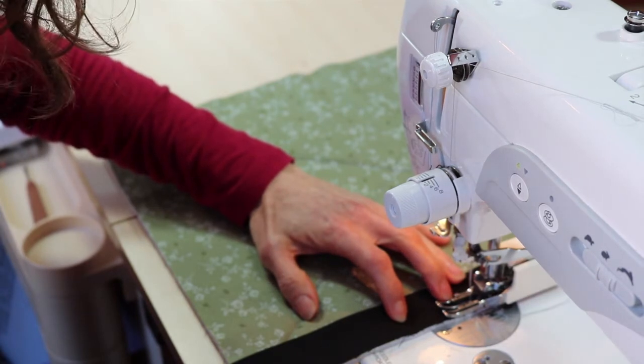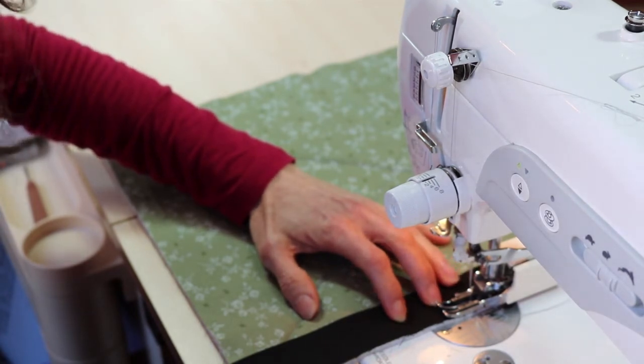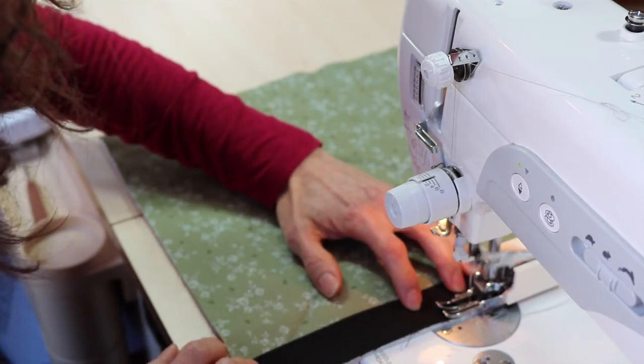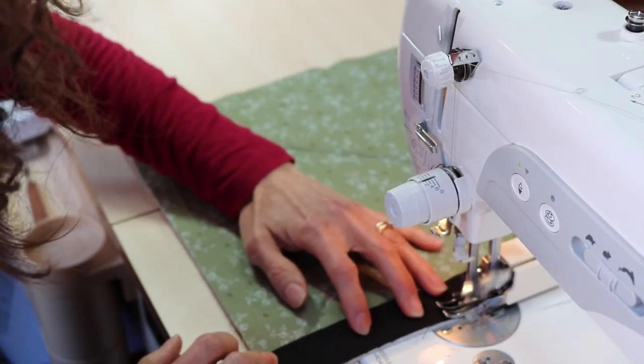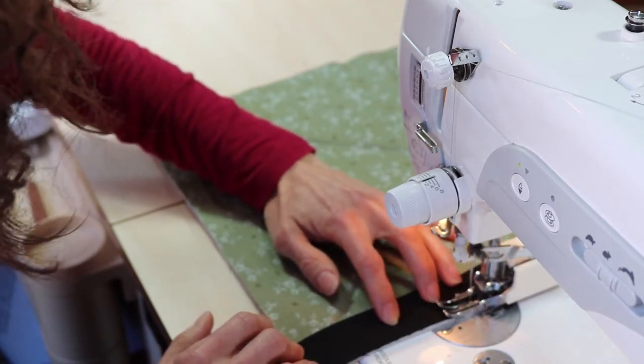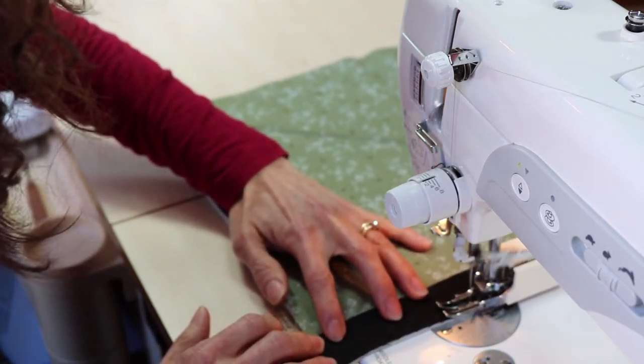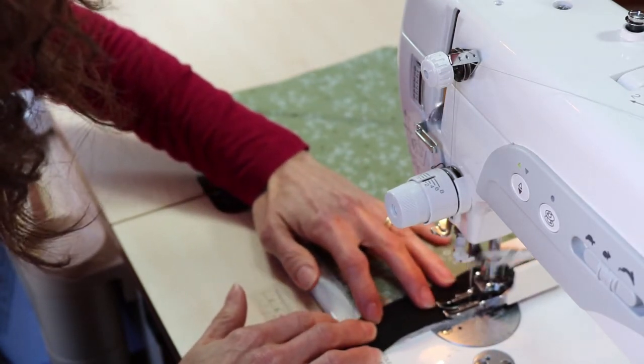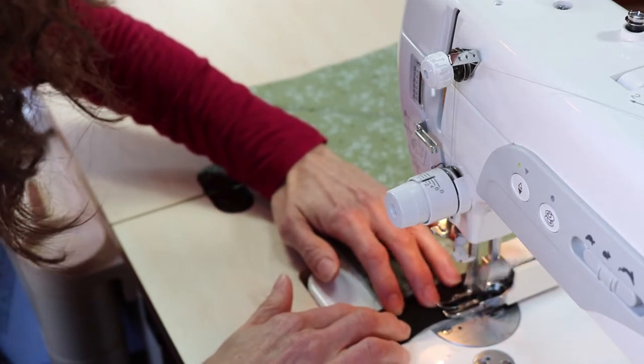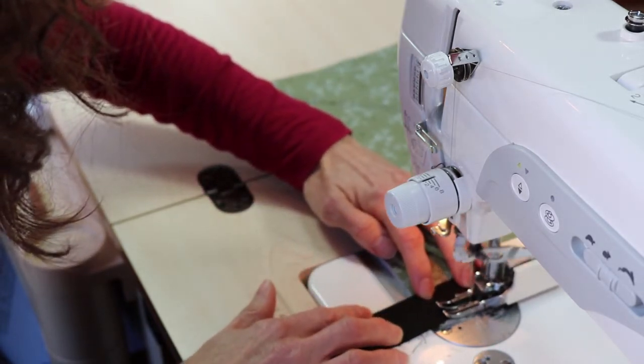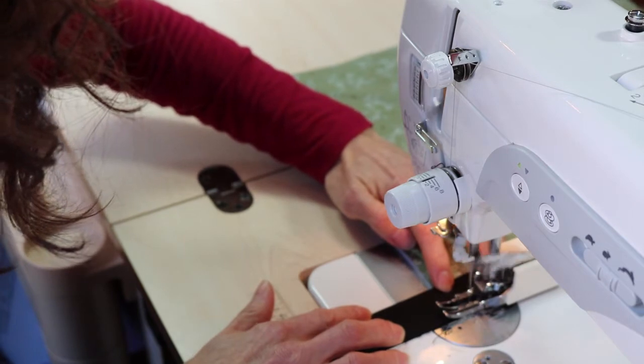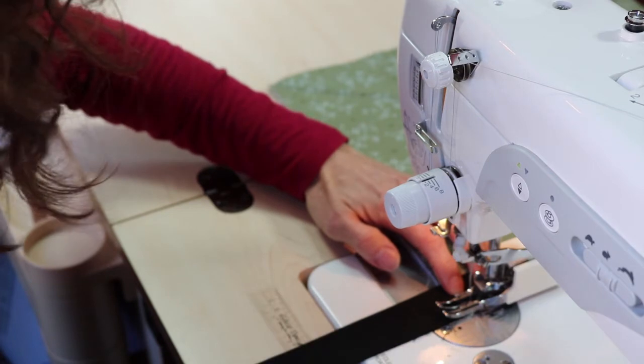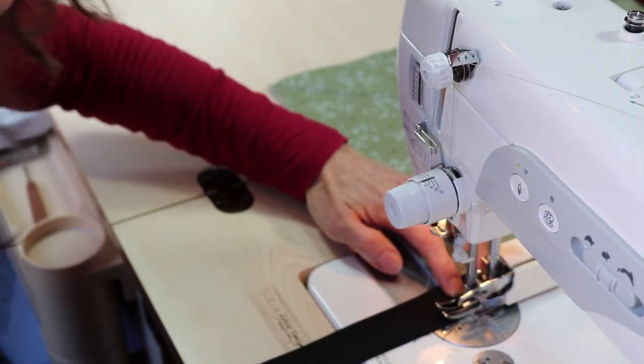You can increase your stitch length to about 2.5 and you're going to continue sewing until a quarter of an inch from the edge. And I eyeball it and you're going to want to back stitch.